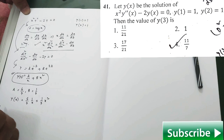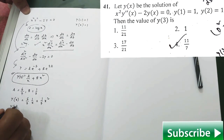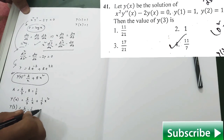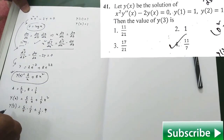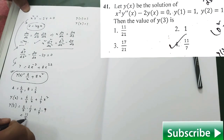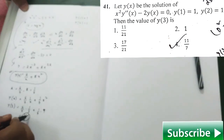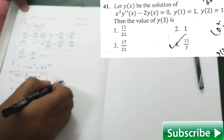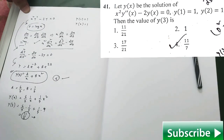Finally, y(3) is going to be (6/7)·(1/3) + (1/7)·9, which turns out to be 11/7. This is exactly your fourth option, so the fourth option is the correct one here.